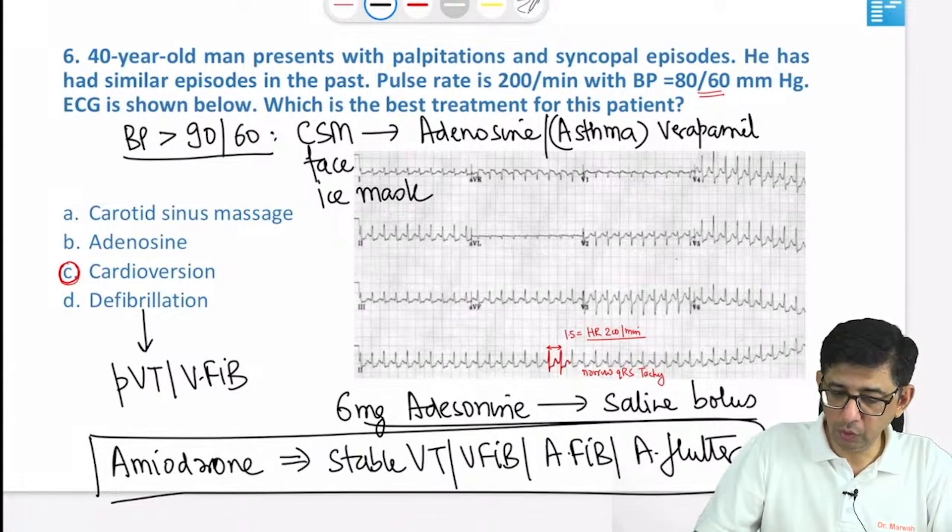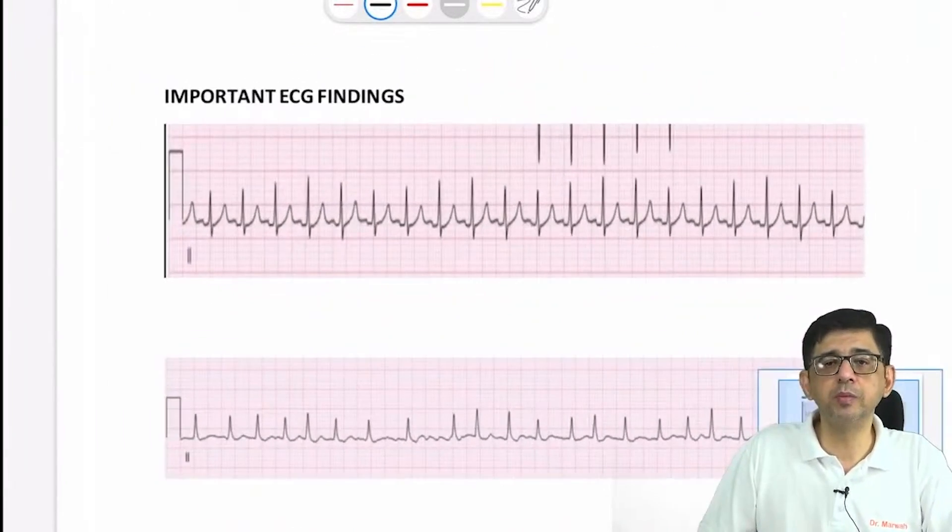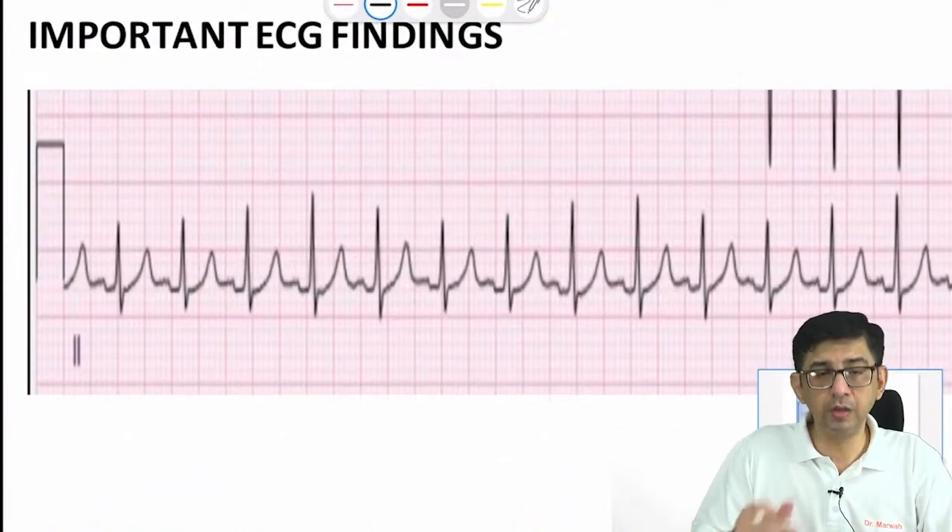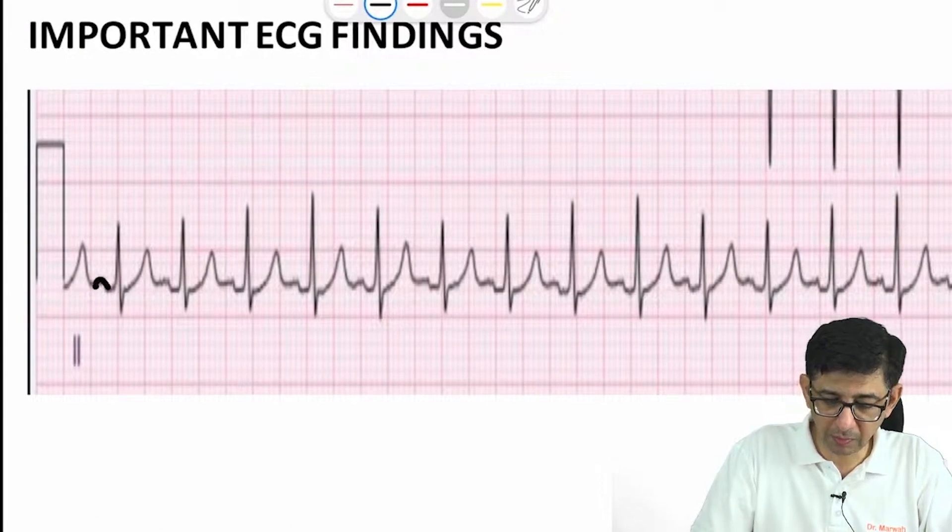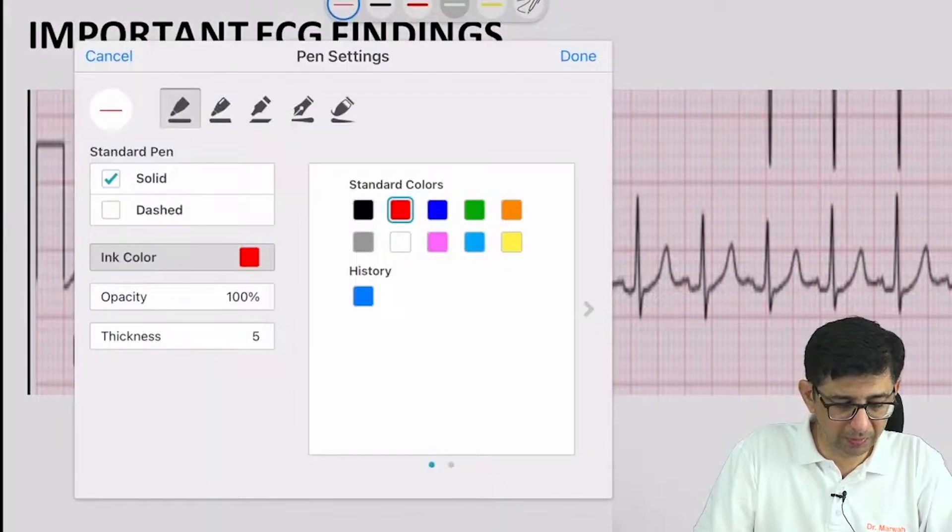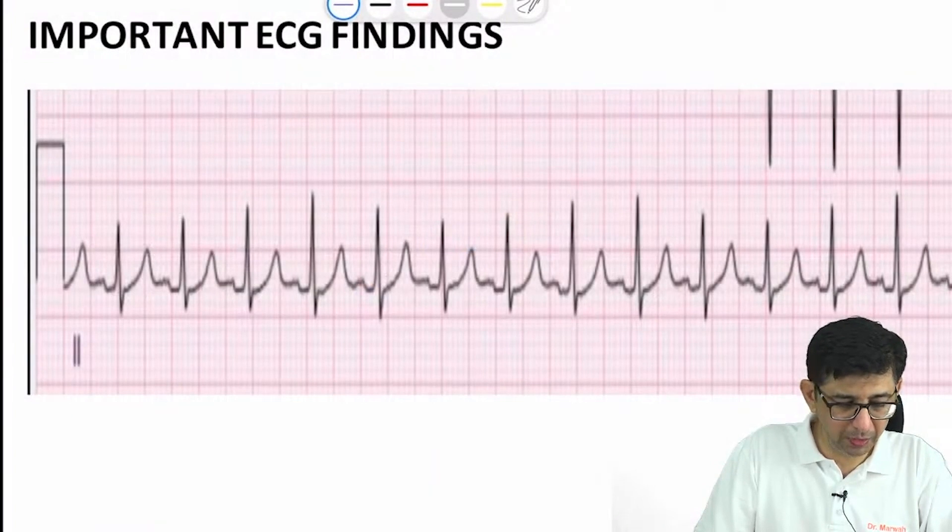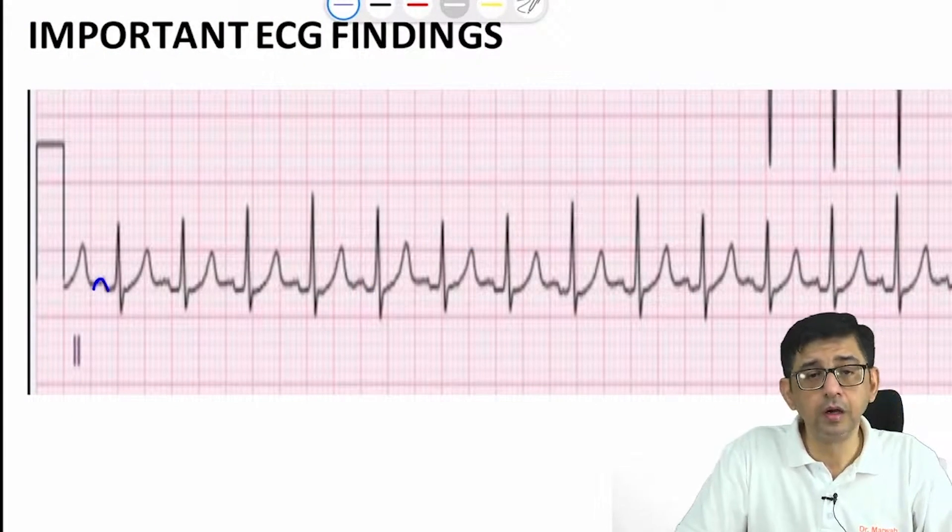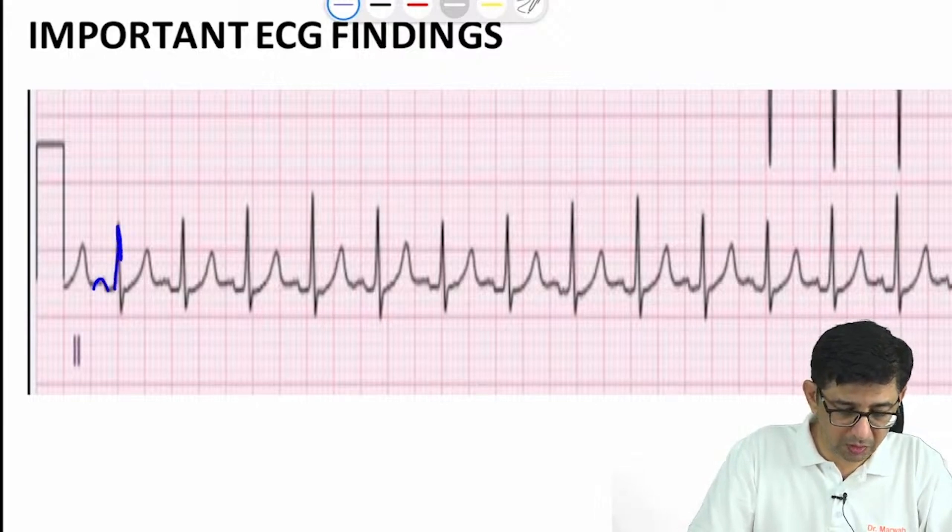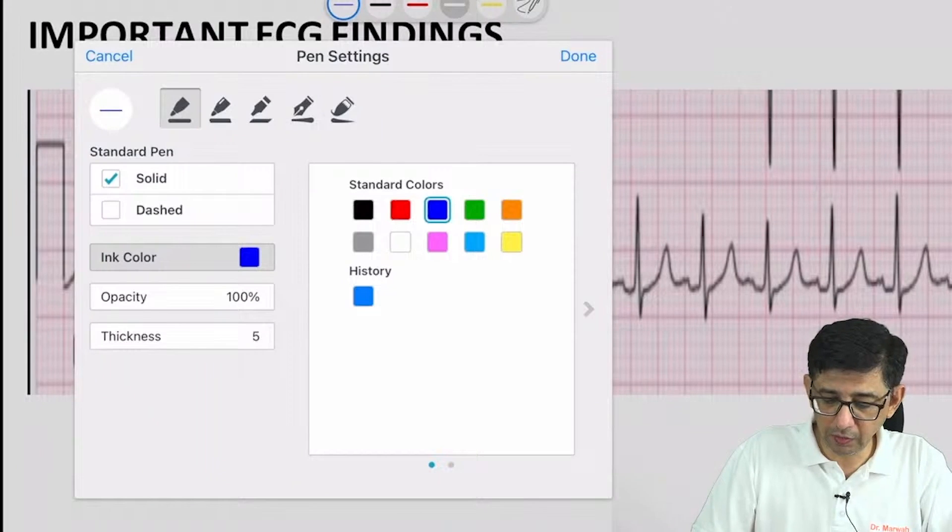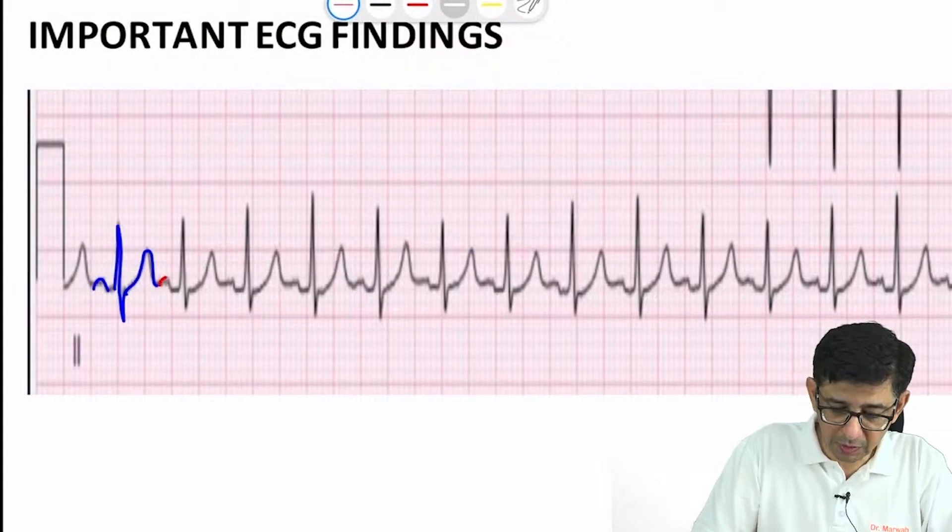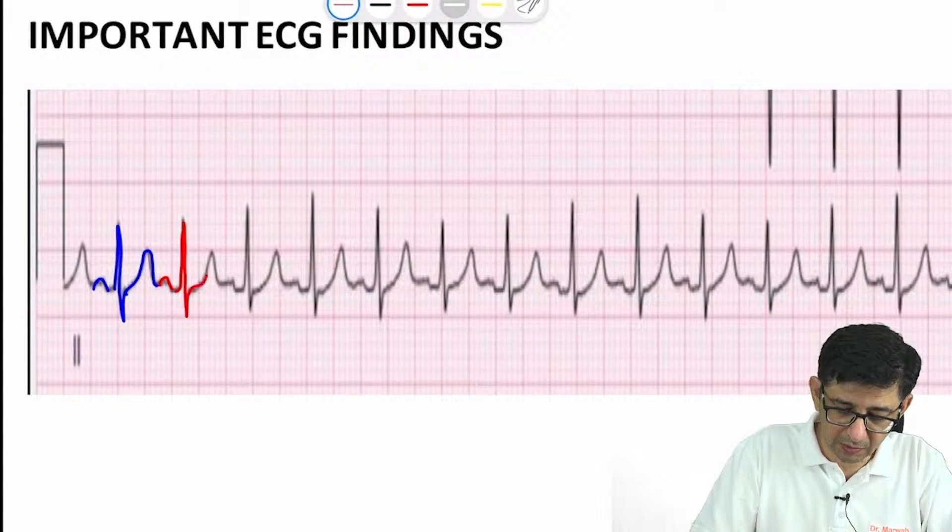Let's have a quick look at a couple of ECGs. Spot diagnosis, no history given. This is normal sinus rhythm. I'm using the blue marker. This is a P wave, then a QRS complex, then the T wave coming up. Then again a P wave, QRS complex, and T wave.